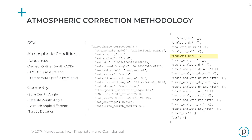So how do we make our surface reflectance products? We use the 6S atmospheric correction model in combination with MODIS data for aerosol type, aerosol optical depth, water vapor, ozone, and pressure and temperature profiles. We also account for factors like sun angle and satellite viewing geometry. What this means is that we're able to deliver data that is consistent across seasons, continents, and instruments.